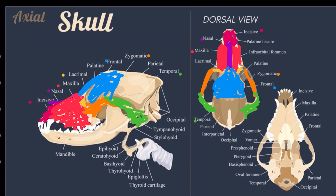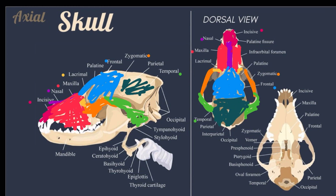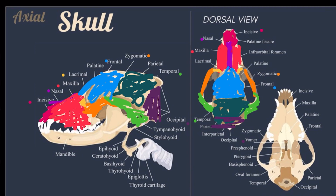In cattle and pigs, the frontal bone forms the entire roof. Next is the parietal. Together with the frontal, it forms the roof of the cranial cavity, except in pig and cattle. Then the occipital — this is the most caudal bone of the skull. It contains the foramen magnum through which the spinal cord passes.